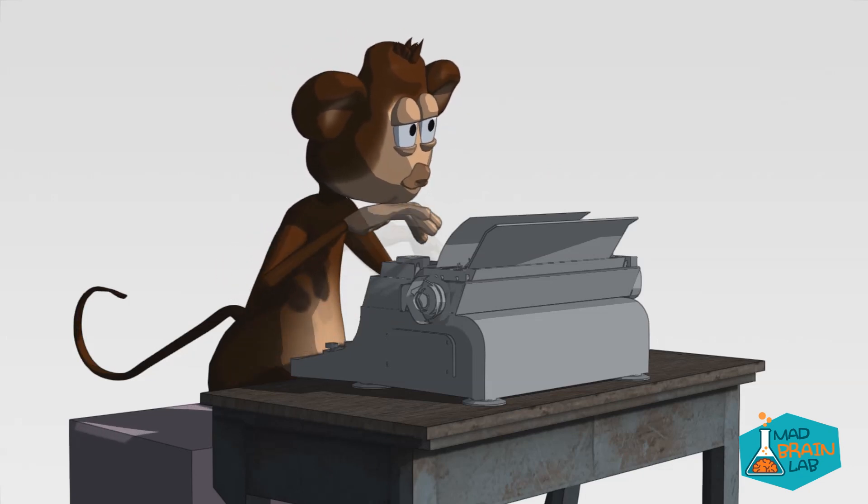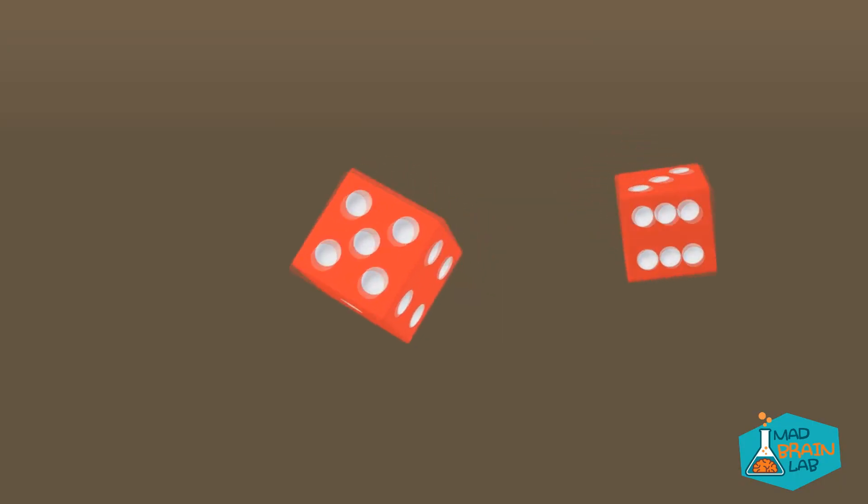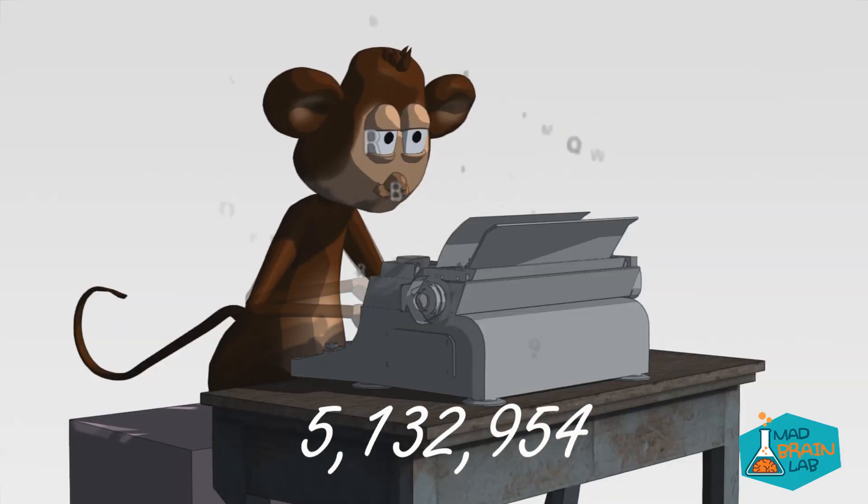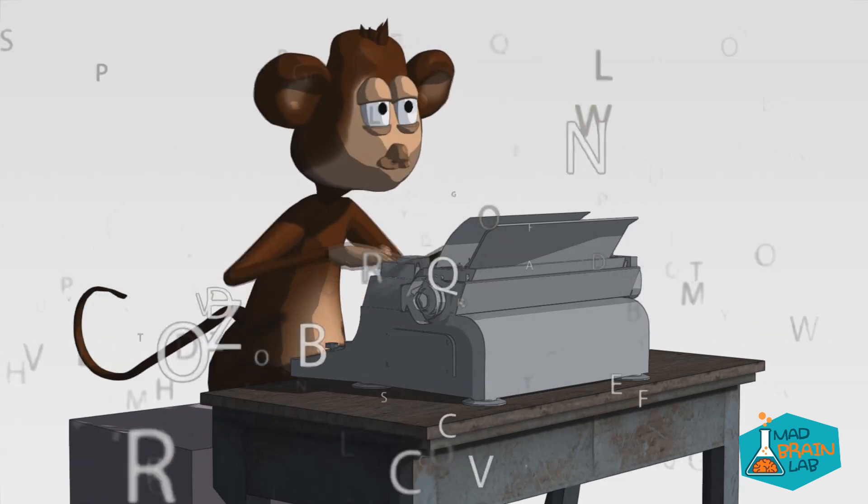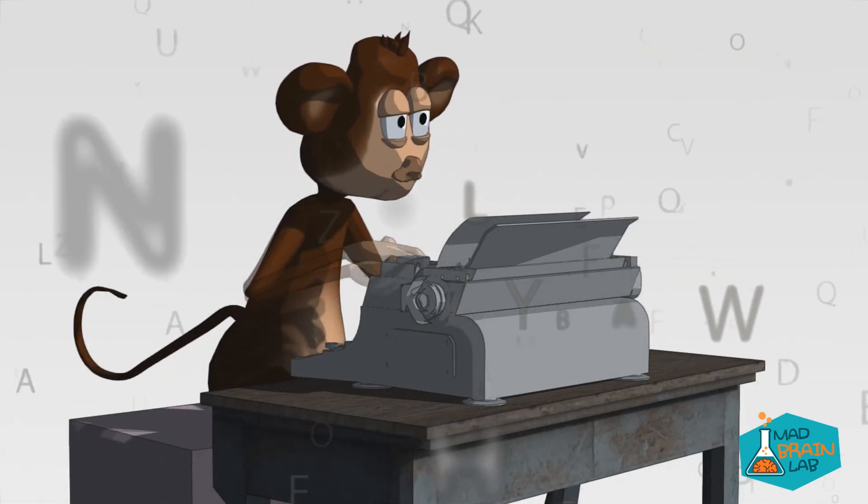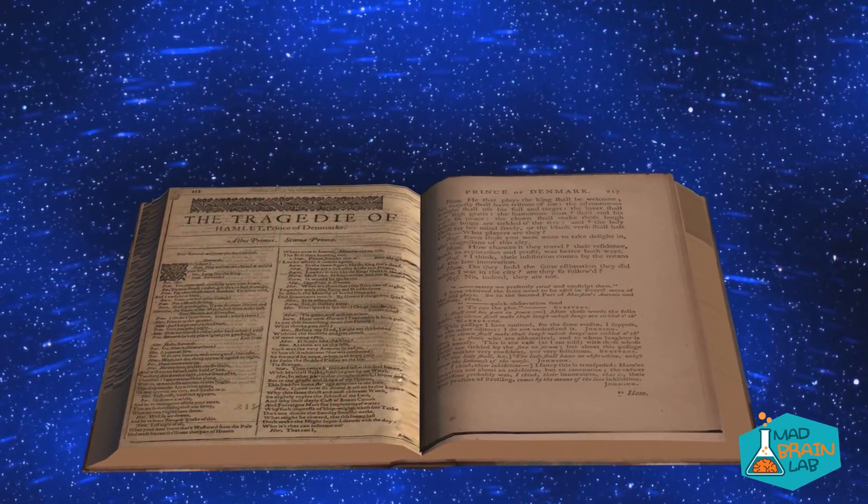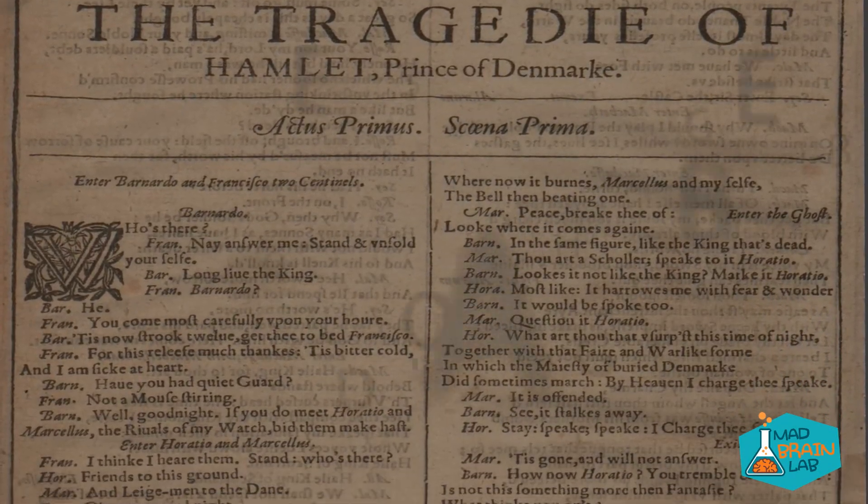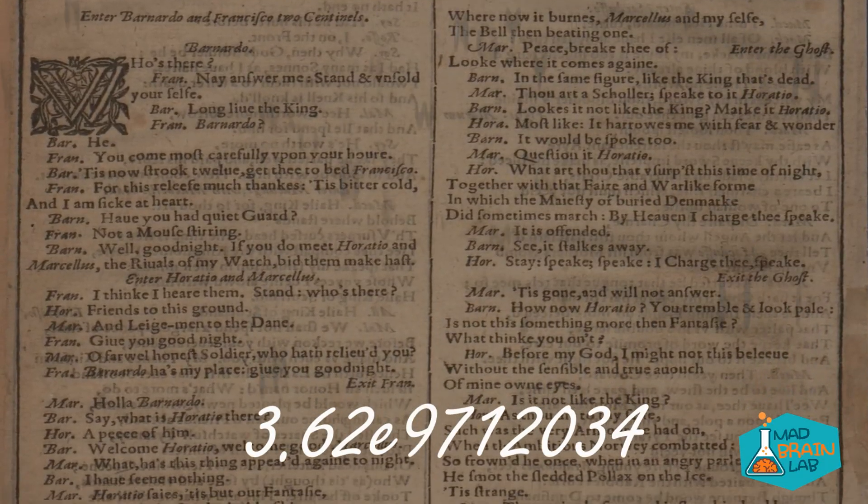For simplicity reasons, Mike gets a 78-letter keyboard. Effectively, our monkey is throwing a 78-sided dice every second repeatedly to complete the work of Shakespeare. There are 5,132,954 total characters that need to be written in perfect sequence to complete the work of Shakespeare. For Mike to get the first three letters correct is 78 times 78 times 78 seconds. Extrapolate that and we get 3.62 to the power of 9.7 million seconds.